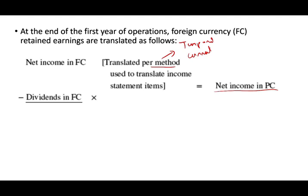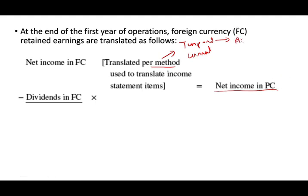Then we're going to take dividends in foreign currency. What do I mean by 'translated per method'? Under the temporal method, we use the average rate for some expenses and the historical rate for others. Under the current method, we use the average rate for all.